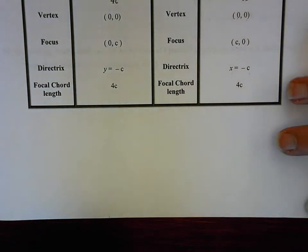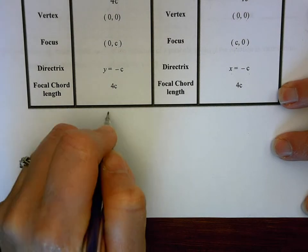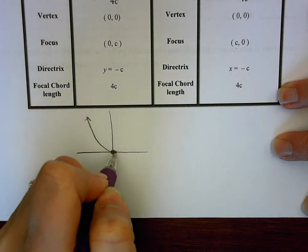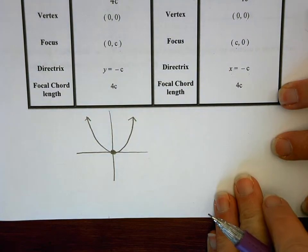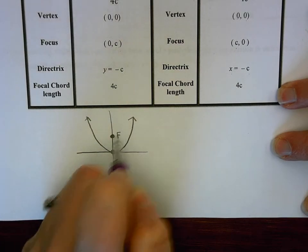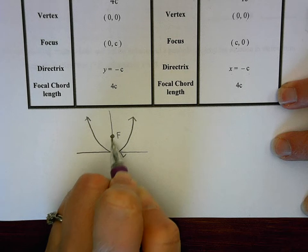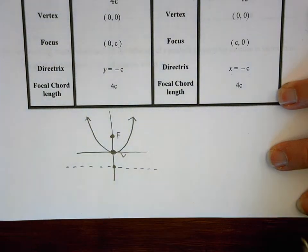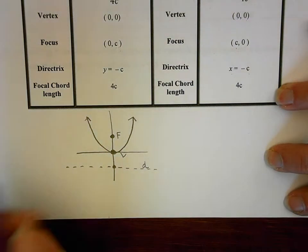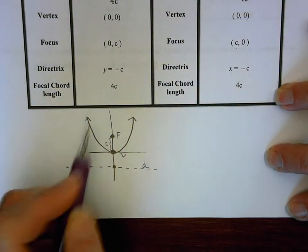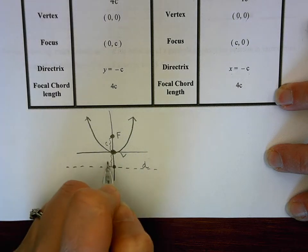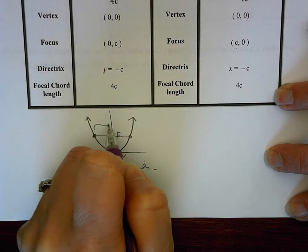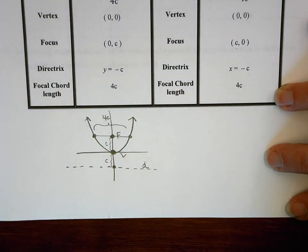Let's do a little sketch to label things. For a vertical parabola with vertex at (0,0), opening upward when a is positive, the focus is somewhere above the vertex. The distance from vertex up to the focus is c, and down to the directrix is also c. The total focal chord length from endpoint to endpoint is 4c — that's our denominator.